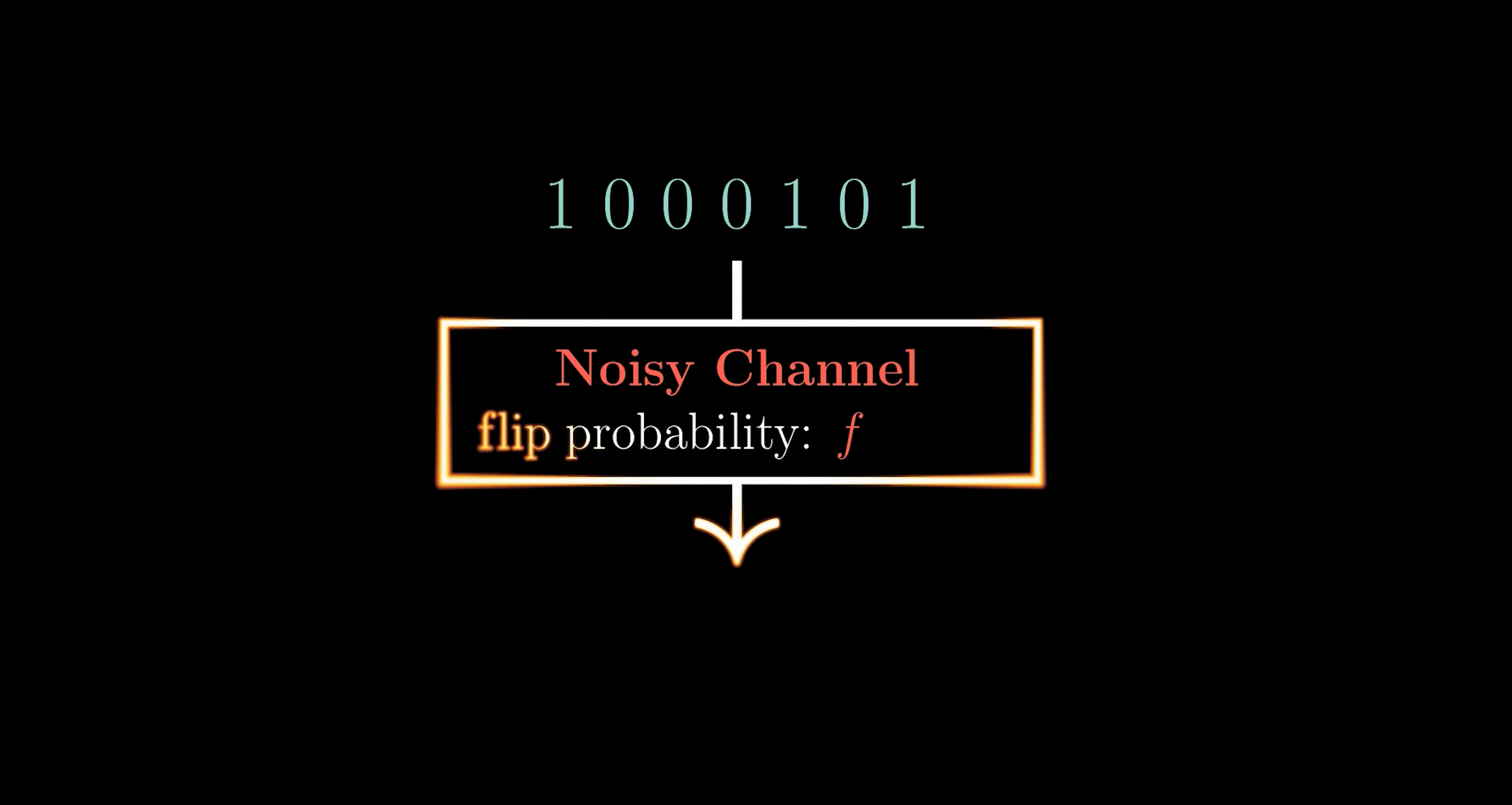Let's say you need to send a binary message, but it must be sent over a noisy channel. By noisy, we mean the channel will randomly flip each bit with probability f. So if f is 0.1, the message received will have about 10% of its bits different from the original message sent. That's the problem.